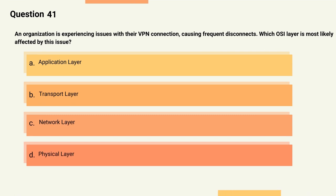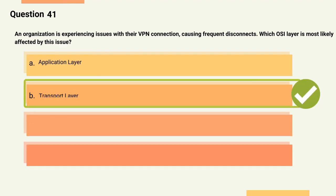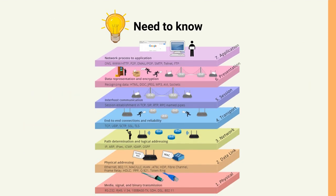Question 41: An organization is experiencing issues with their VPN connection causing frequent disconnects. Which OSI layer is most likely affected? Options: A) Application layer, B) Transport layer, C) Network layer, D) Physical layer. The correct answer is Option B, Transport layer. Explanation: The transport layer is responsible for reliable data transfer between hosts, which is crucial for maintaining a stable VPN connection.